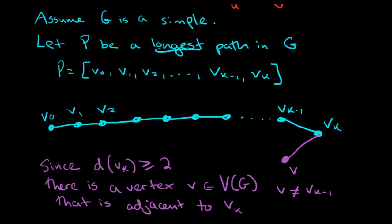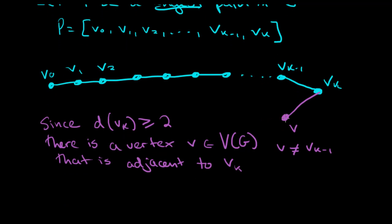So now we might be thinking, well, maybe this vertex doesn't belong to this path. Maybe it's on its own out here. And what we're going to do is we're going to show that that's not the case by doing the following. If V does not lie on P, does not belong to the path P, in other words, V is none of these other vertices,